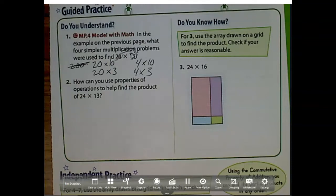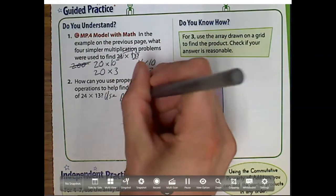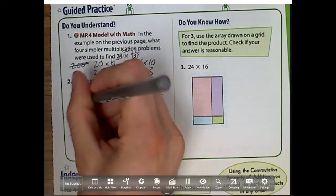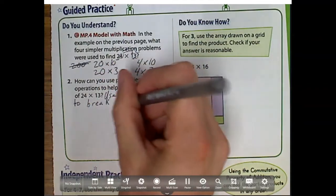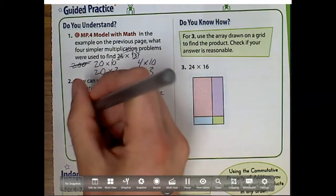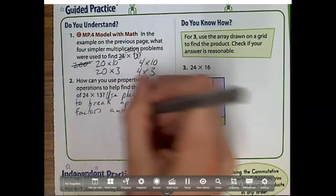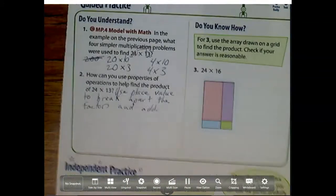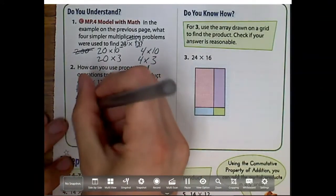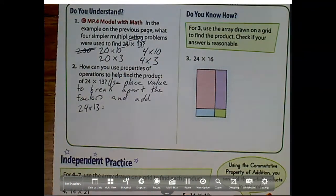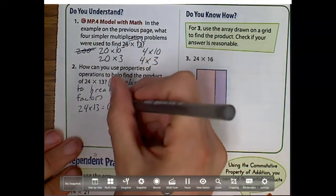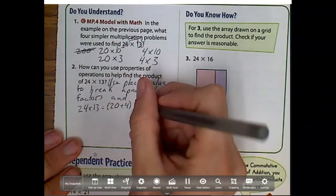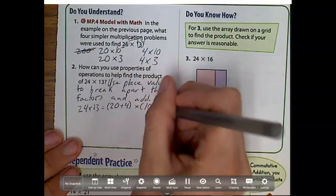So question number two says, how can you use properties of operations to find the product of 24 times 13? So what I'm going to do is, I'm going to use place value to break apart the factors and add. So now what do I have? Well, I'm going to do 24 times 13, and I'm going to, remember, break apart those place values. So 24 is going to be broken up into 20 plus 4, and 13 is going to be broken up into 10 plus 3.